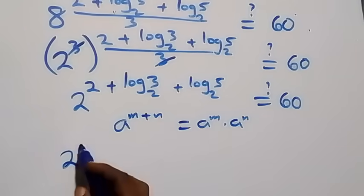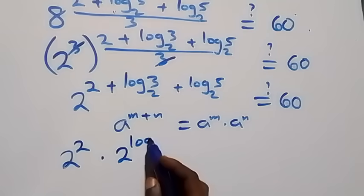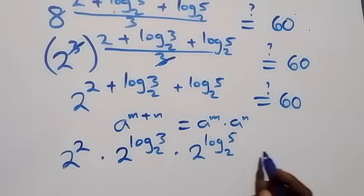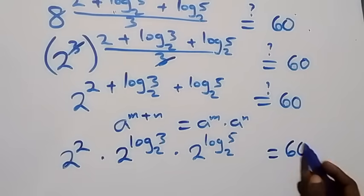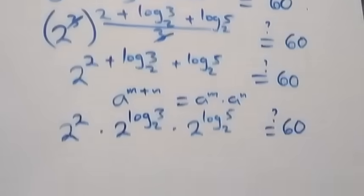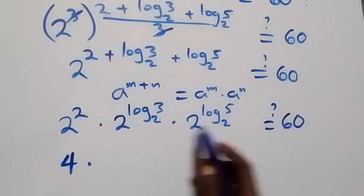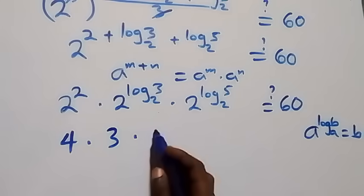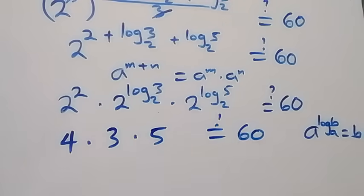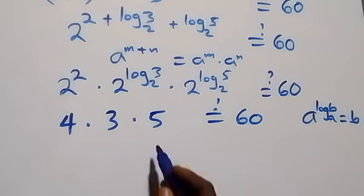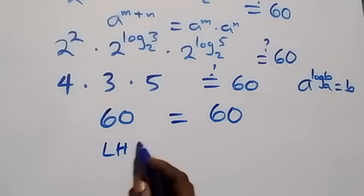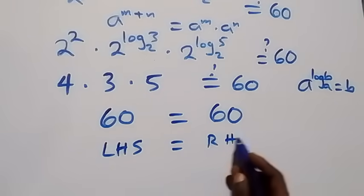This expands as 2 squared times 2 raised to power log 3 base 2 times 2 raised to power log 5 base 2 equals 60. Using the identity a raised to log base a of b equals b, we get 4 times 3 times 5 equals 60, which is indeed 60. The left-hand side equals the right-hand side.